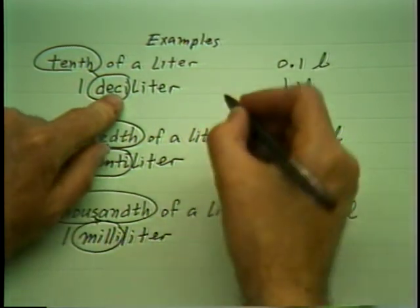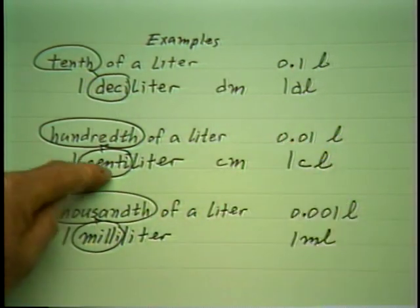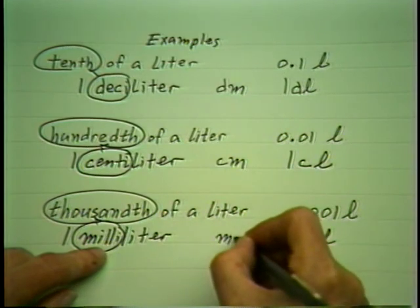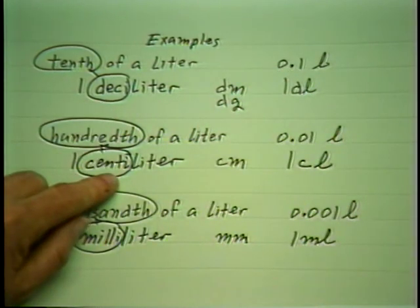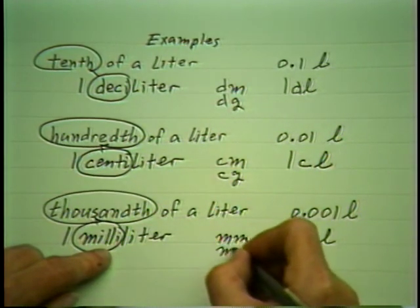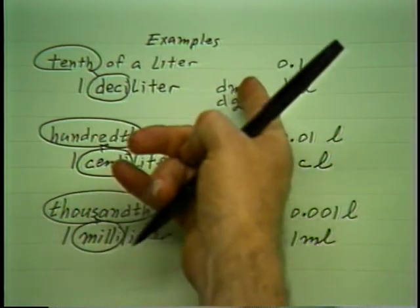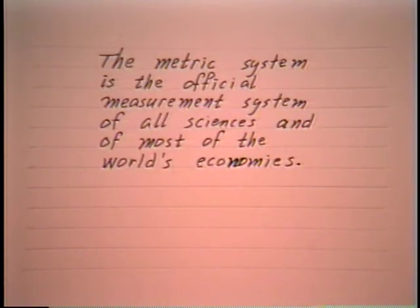And I could have used deci with meter to get decimeter, centi with meter to get centimeter, and milli with meter to get millimeter. I could use deci with grams to get decigrams, a hundredth of a gram would be a centigram, and a thousandth of a gram would be a milligram. If it seems complicated at first, it's simply because it's new. The metric system is the official measurement system of all sciences and of most of the world's economies.